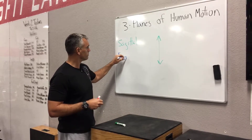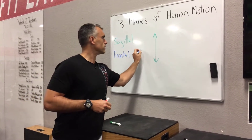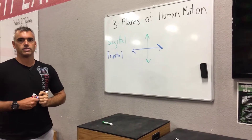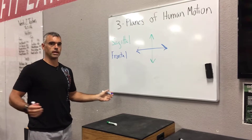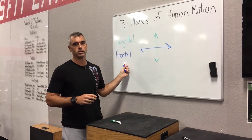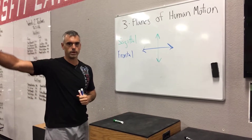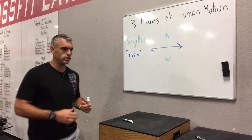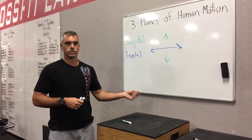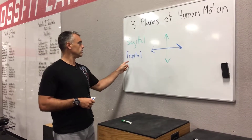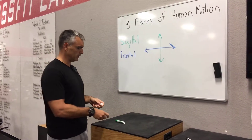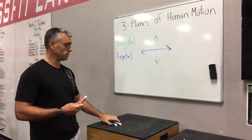The second plane of human motion is the frontal plane — that's side-to-side or lateral movement, right to left. Examples of frontal plane exercises include dumbbell lateral raises, lateral lunges, lateral step-ups, and lateral jogging or side-stepping. That's our frontal plane.